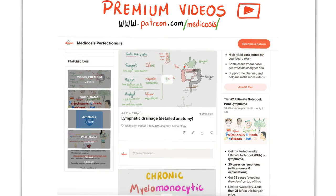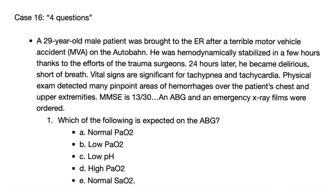By the way, you can now get some of my premium videos not available on YouTube — please go to patreon.com/medicosis and click on premium videos. Now let me answer the case from the previous lecture: a 29-year-old male patient was brought to the ER after a terrible motor vehicle accident on the autobahn. He was hemodynamically stable in the first few hours, thanks to the trauma surgeons. 24 hours later, he became delirious and short of breath. Vital signs showed tachypnea and tachycardia. Physical exam detected many pinpoint areas of hemorrhage over the patient's chest and upper extremities. Mini-mental status exam was 13 out of 30, and an ABG and emergency X-ray were ordered.